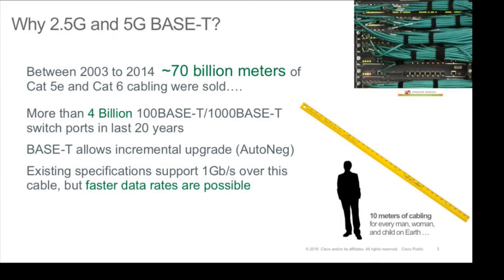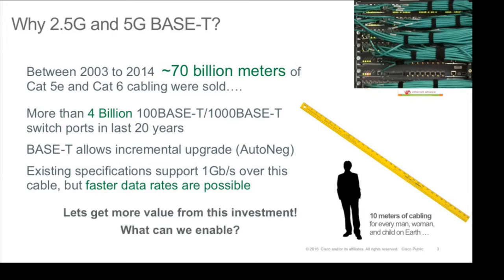Existing specifications only run 1G Base-T over 100 metres of structured cabling for Cat 5 or 6, but we could actually do faster rates. We replace cable maybe every 15 or 20 years — or when the building burns down. Cabling might cost $200 to $700 a run to replace, you might need to open up walls, move people out. If you're a hospital, you can't open up the roof above an operating theatre. So people are very resistant to recable unless they're in a new building. We have this huge install base — we can give you more value out of it without a recable.